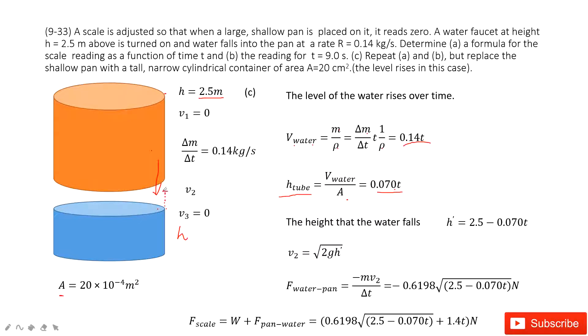And then we can consider, the height that the water falls, just hits this cylinder, the surface of the cylinder. It is just this one. Use 2.5 meter minus this increase, the narrow blue cylinder.